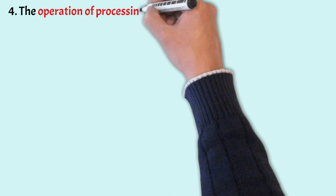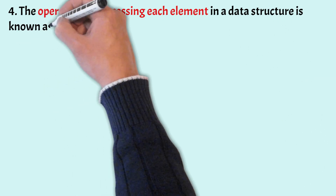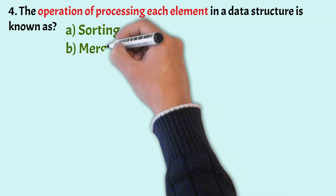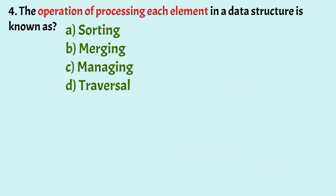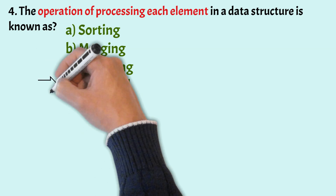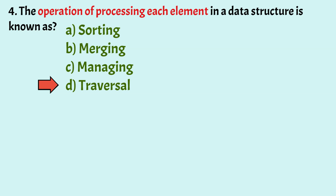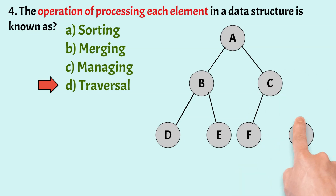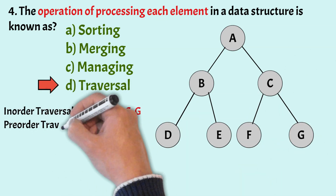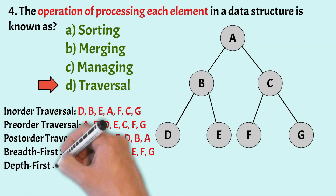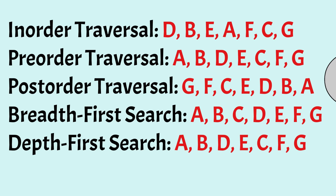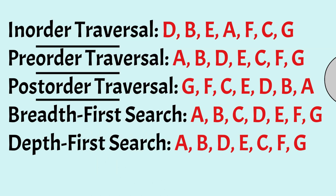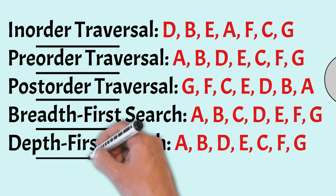Coming to the next question. The operation of processing each element in a data structure is known as? The options are: sorting, merging, managing, traversal. The correct answer is Option D, that is traversal. Traversal is the process of visiting each node in a data structure and performing some action. For example, there are different ways to traverse a tree: in-order traversal, pre-order traversal, post-order traversal, breadth-first search and depth-first search.